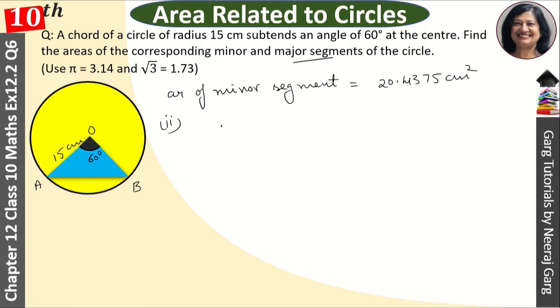In the second part, we need to remove area of major segment. For major segment, we need to know area of circle. So first of all, we will remove area of circle, that is pi r squared.